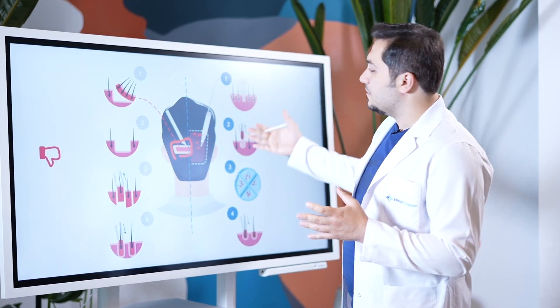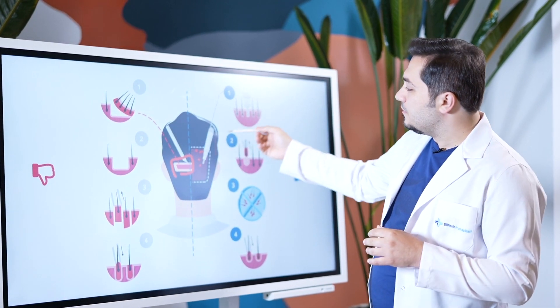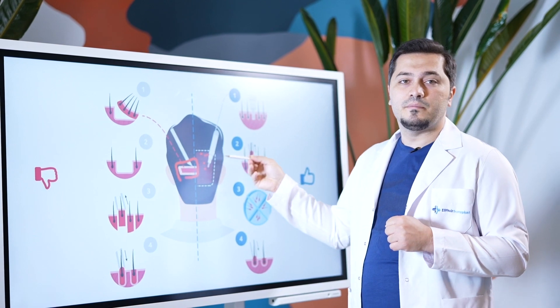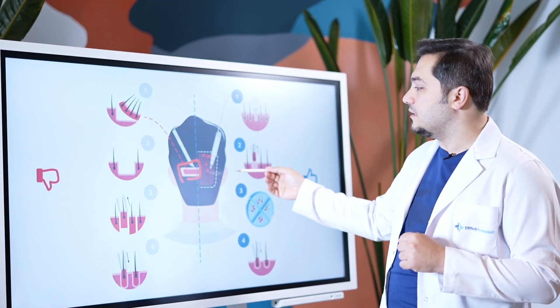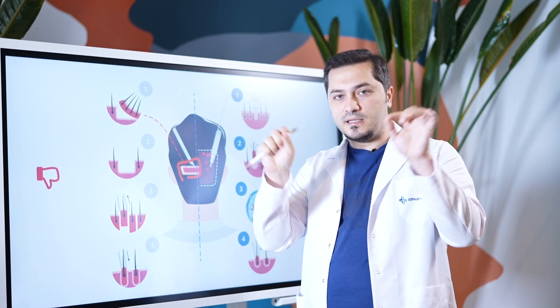I will now explain the advantages of this method over the old method. As you can see, the FUE technique leaves minimal scars in the donor area, but the FUT technique leaves a huge strip-shaped scar.